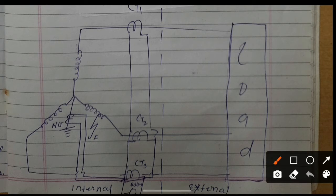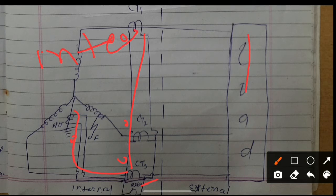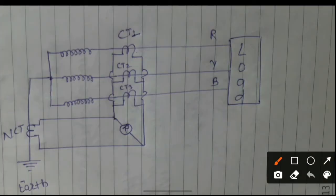Here we can see the NCT connected to all the CTs. This is the polarity. Over here we can see this is the relay. This is the load, this is the internal part, and this is the external part.